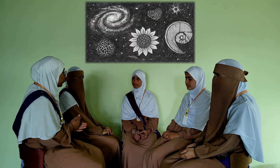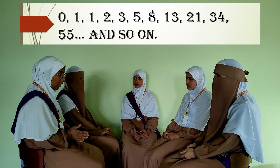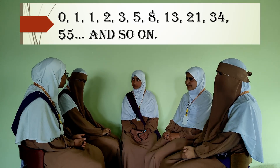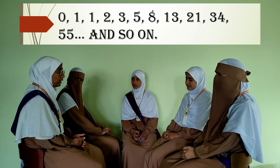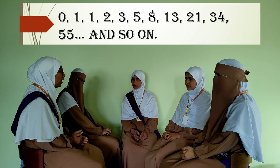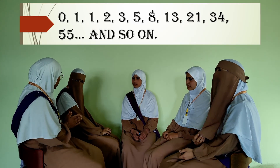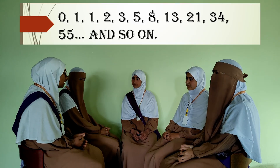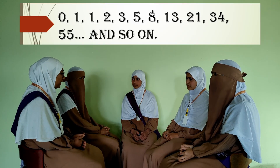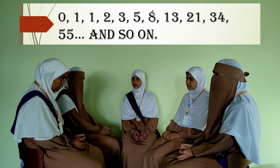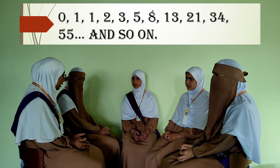Sister Munazza, let me explain what the Fibonacci sequence and the golden ratio actually are. The Fibonacci sequence is a special pattern of numbers where each number is the sum of the two preceding ones. It goes like this: 0, 1, 1, 2, 3, 5, and so on. Now, if you take two consecutive Fibonacci numbers and divide the larger by the smaller, you get a number that gets closer and closer to 1.618, which is known as the golden ratio.